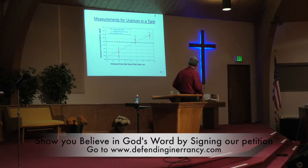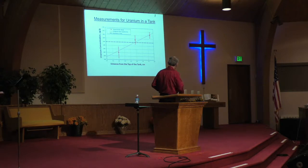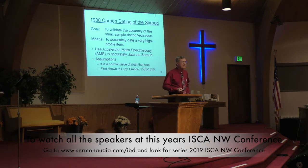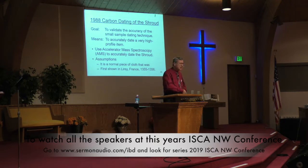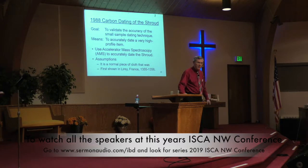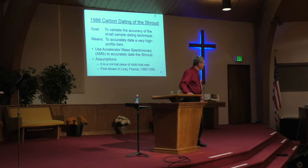That curve with different axis labels is the same one I'll show later for the Shroud of Turin results. When they did the carbon dating in 1988, you would think the goal would be to obtain the correct date for the Shroud of Turin. Unfortunately, they had no such idea — their main goal was not even related to the Shroud of Turin.